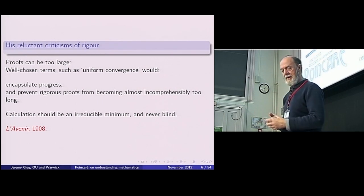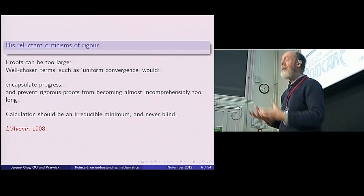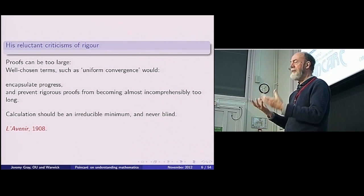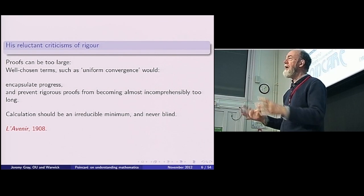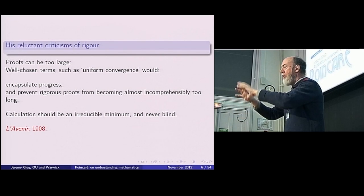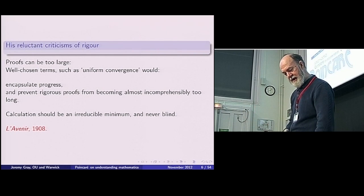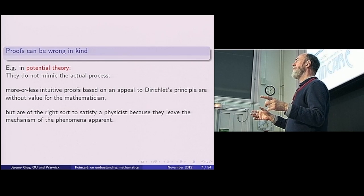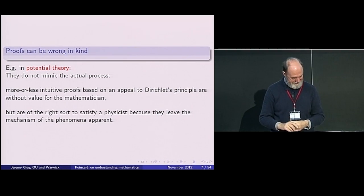But he was aware that rigor was not always the whole story. Proofs can become too large to be properly understood and new terminology in his day. He gave the example of uniform convergence enabled you to simplify proofs to isolate a bit and to say we deal with that this way. Now we have a little block, a piece that we can carry around and put into a longer argument without losing the thread. This particular paper suffered rather terribly when it was anthologized.